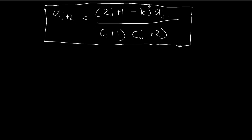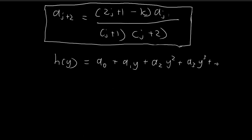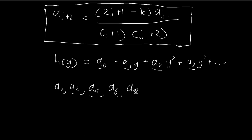In the previous videos we managed to find a recursion formula for h(y), which is given by an infinite series. Using this recursion formula we can deduce what the constants a's should be. We start with a0 and use the recursion formula to get a2, then a4, then a6, and so on. This method generates all the even-subscripted constants. We also need to specify a1 and then use the recursion formula to generate a3, a5, a7, and so on.